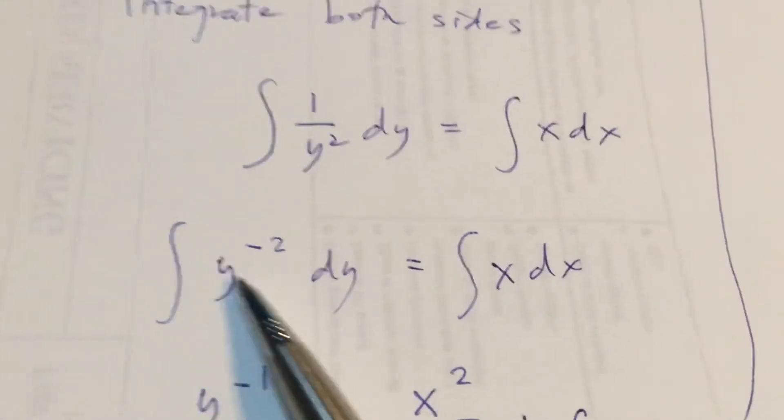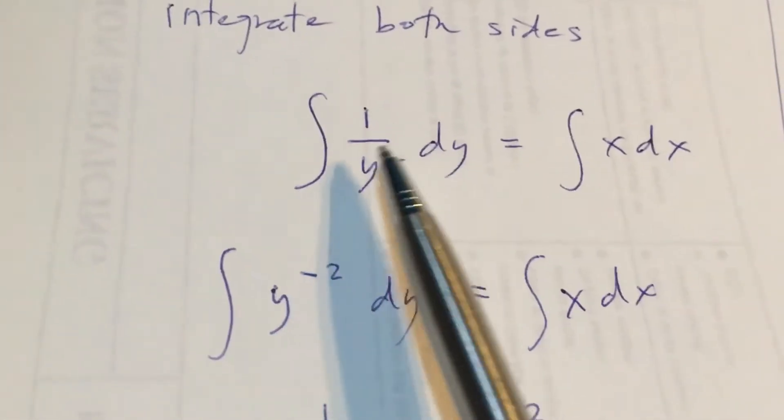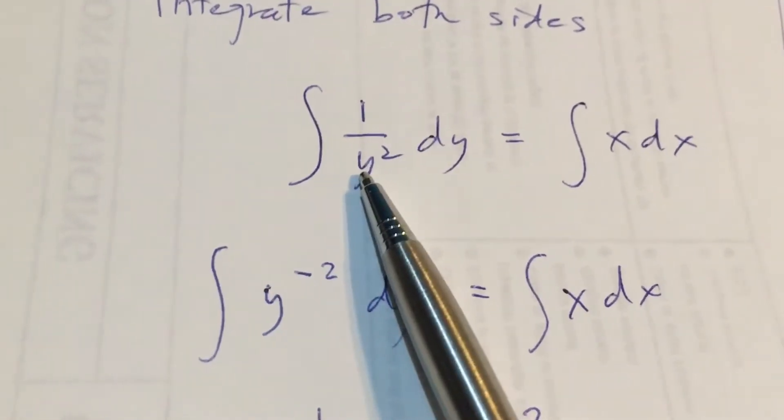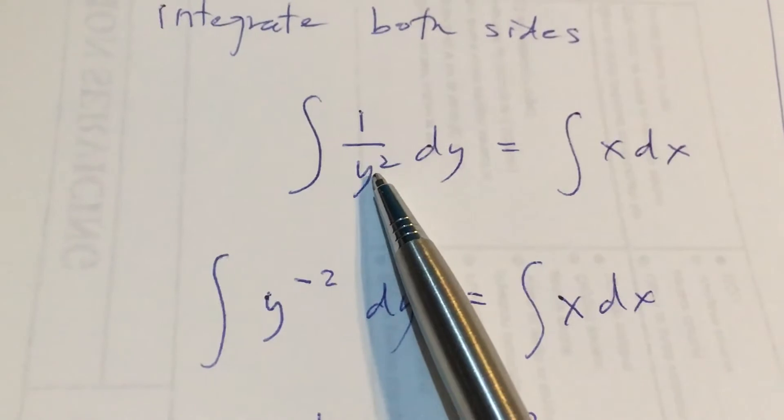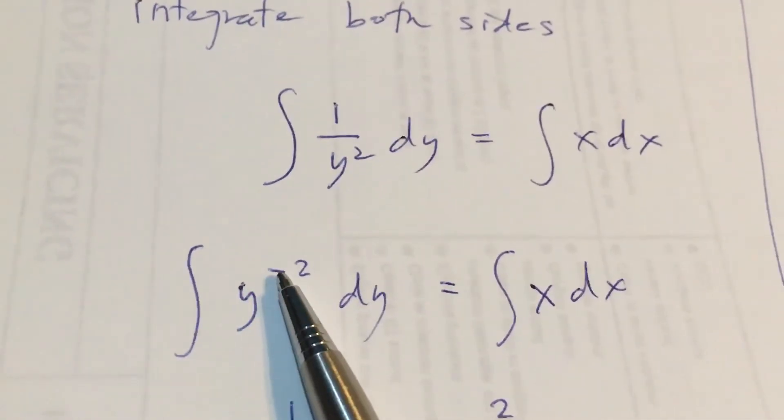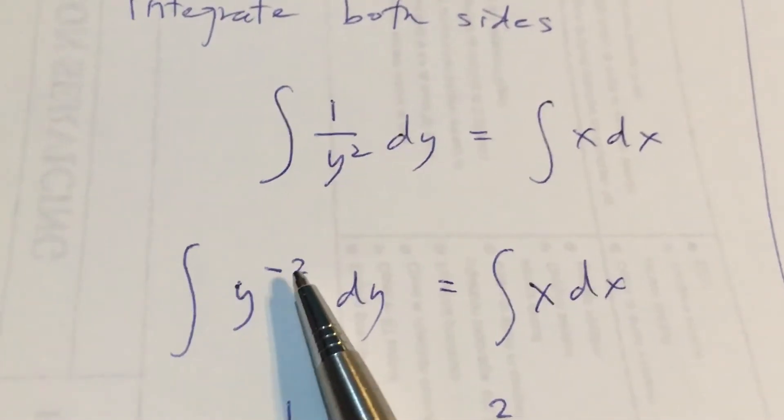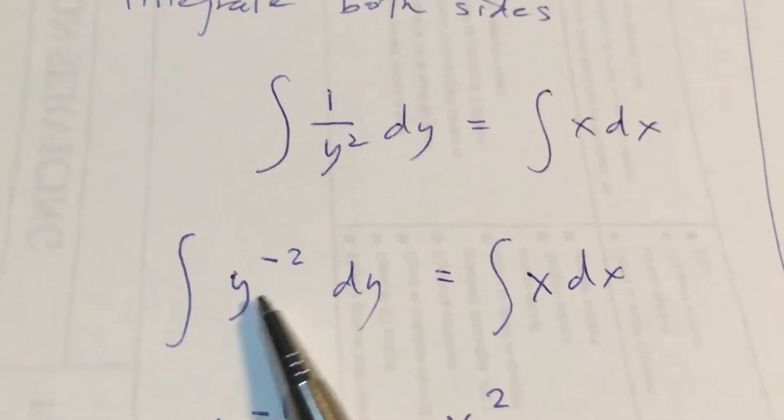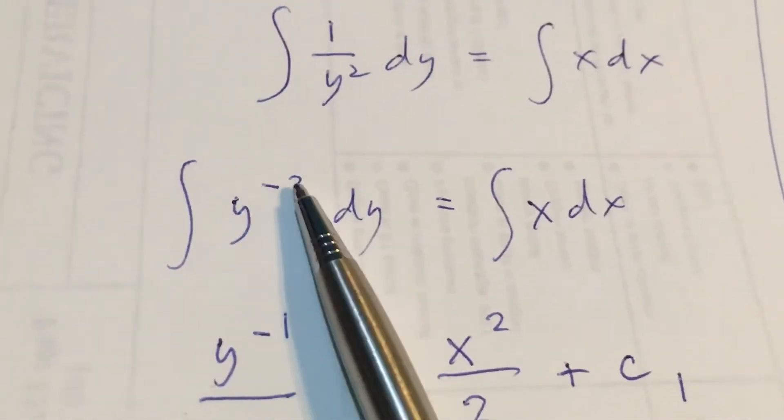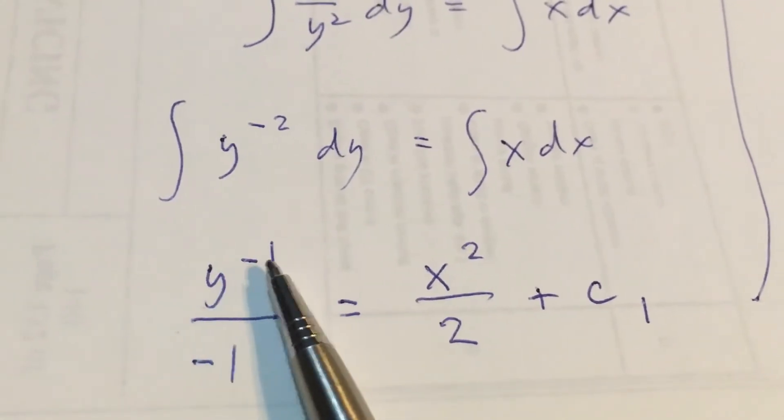And as you can recall, if we integrate this kind of expression, let this denominator transpose to the numerator. So that this will become a negative 2 exponent. And by adding a plus 1 to negative 2, that will result as y raised to the negative 1.